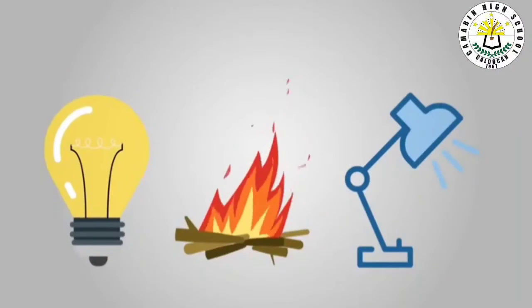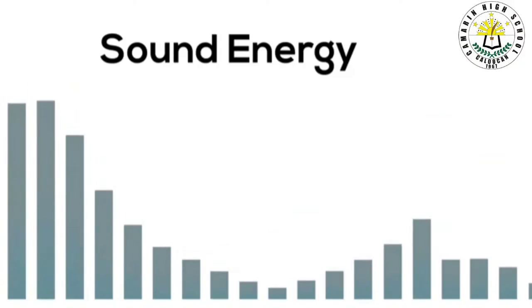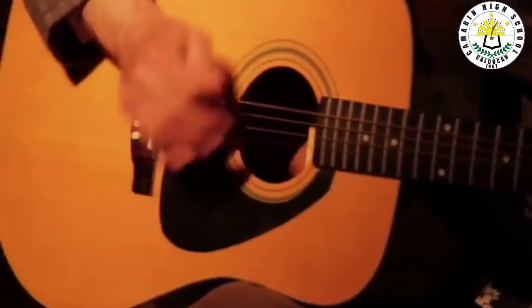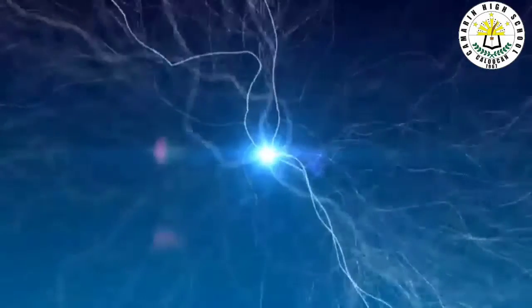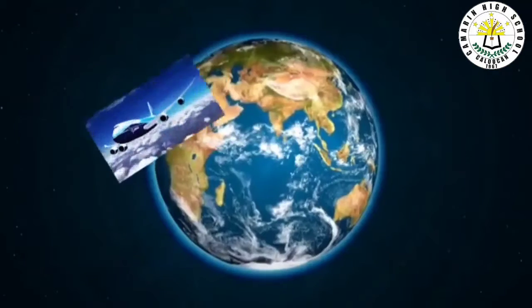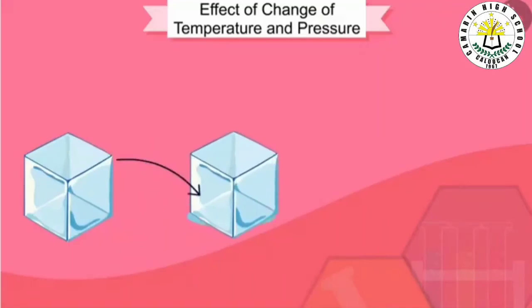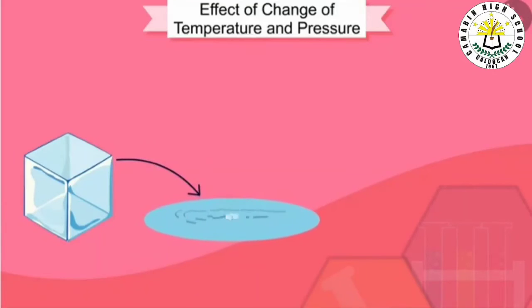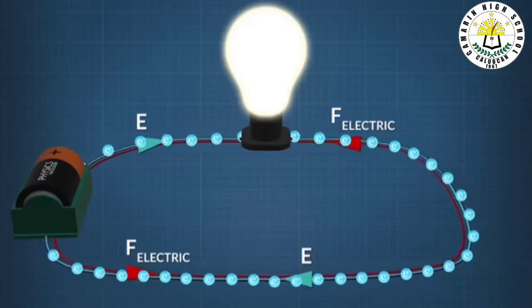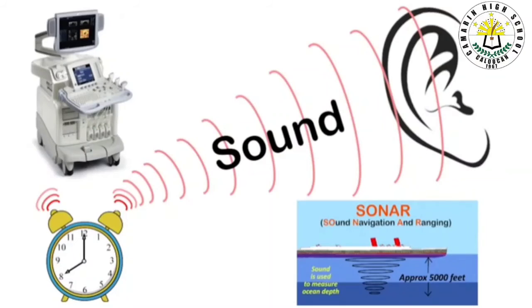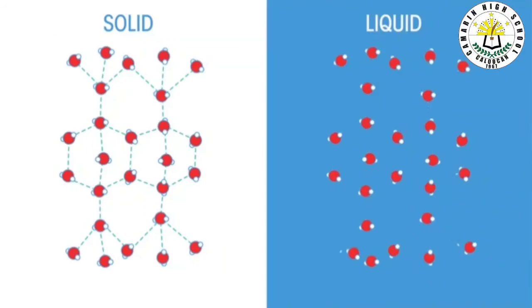In Grade 8, you will have a deep understanding of energy by describing how energy transfer affects and is affected by matter. You will explore some changes when there is energy transfer, such as changes in temperature, changes in the current in a circuit, or changes in the speed of sound traveling through a medium. You will relate these changes to the energy of the particles that make up matter.